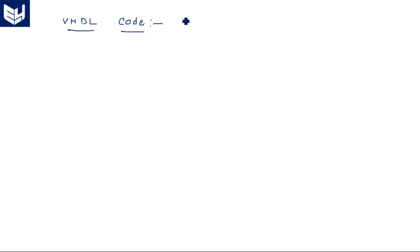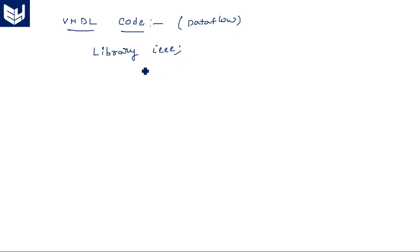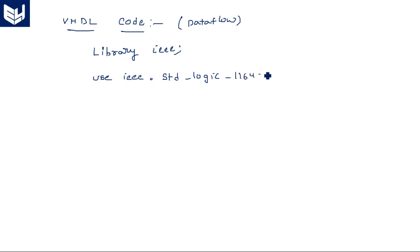For the dataflow model of the 2-to-4 decoder, we begin with the library declaration: 'library IEEE'. When starting a VHDL code, the first two lines should be the library and the package. The package is 'use IEEE.std_logic_1164.all', which is a common package used for all types of code.